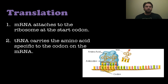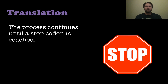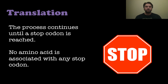In step two, transfer RNA carries an amino acid specific to the codon on the messenger RNA. Each transfer RNA has a different sequence on the very bottom of it, and each sequence is specific to the complementary sequence on the messenger RNA. The tRNA carries a different amino acid based on whatever codon it has. In the last step, amino acids bind with each other, making a long polypeptide chain which will eventually fold and become a protein. The process continues until a stop codon is reached, and no amino acid is associated with the stop codon — it just signals everything to stop.